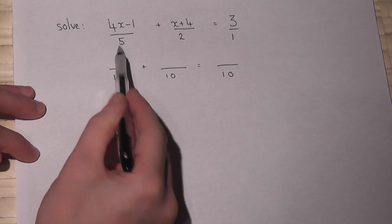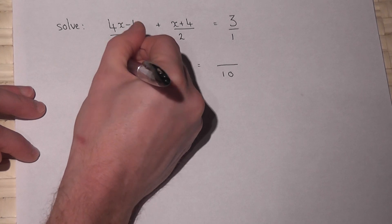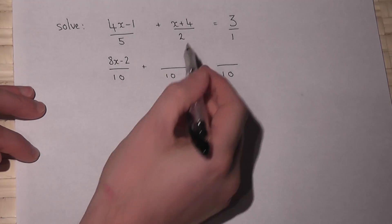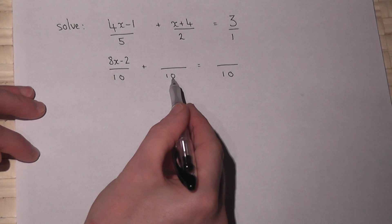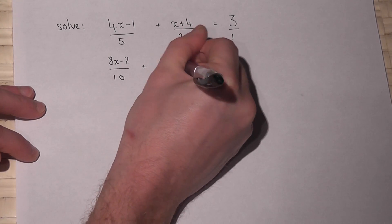Now that's been times by 2, so I must also double the top. So 8x minus 2. This has been times by 5, so times the top by 5, 5x plus 20.